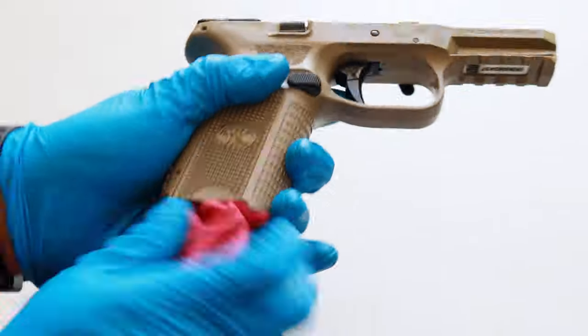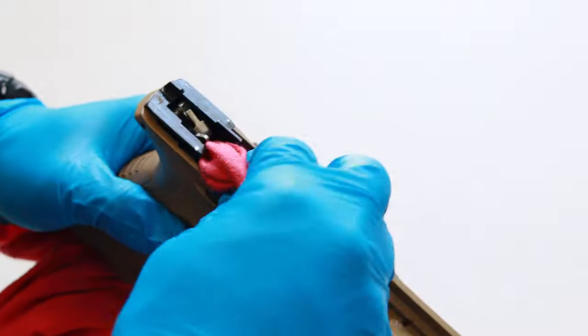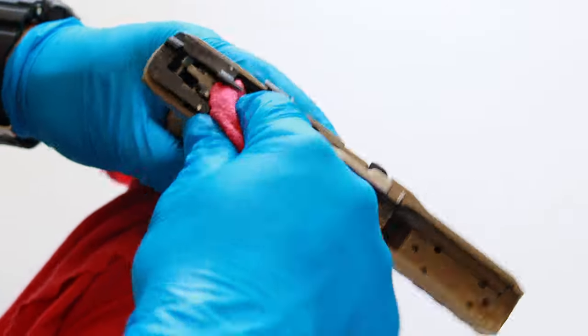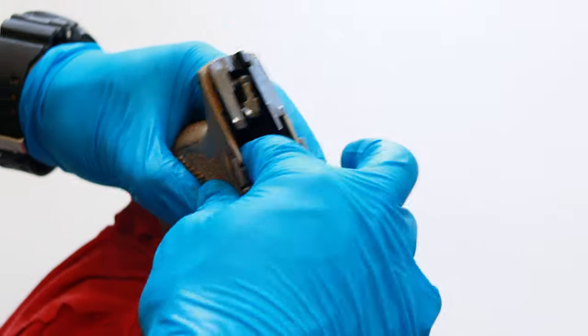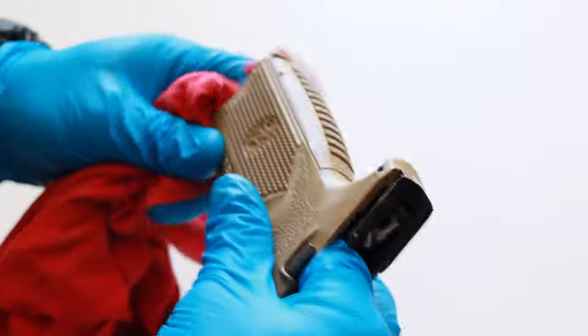To clean out the magazine well, I'm just going to ball up a t-shirt and feed it through from bottom to the top. Just be careful of the intricate parts at the top of the frame. If it feels like the rag's too big to feed all the way through the top, don't try to force it. Just push it up, get a good clean, and pull it right back out through the bottom of the grip.